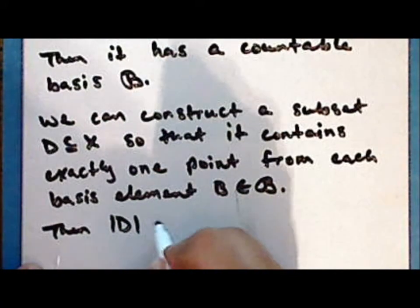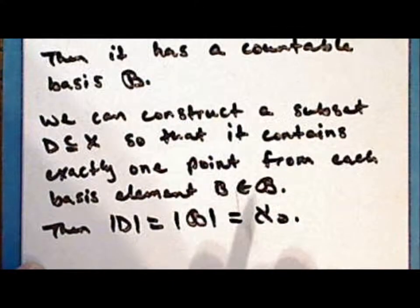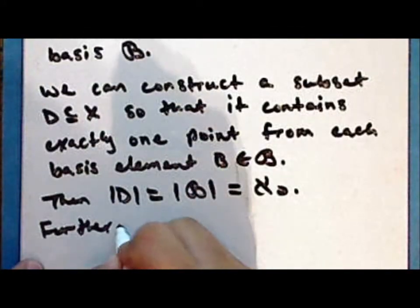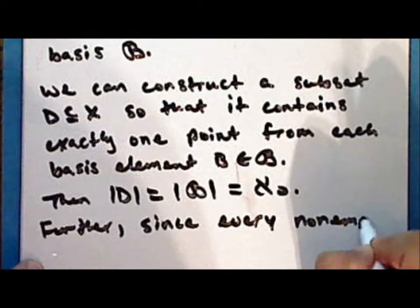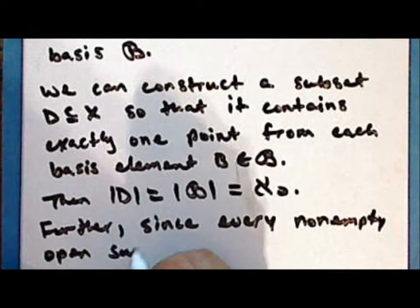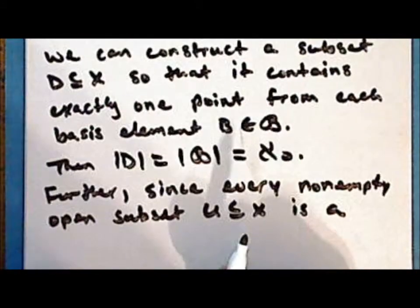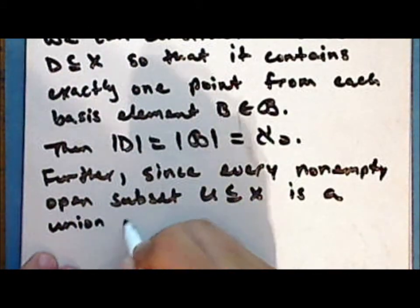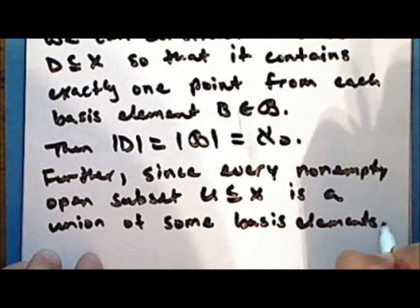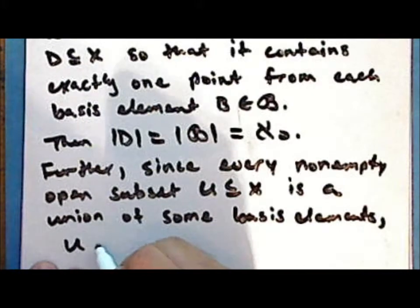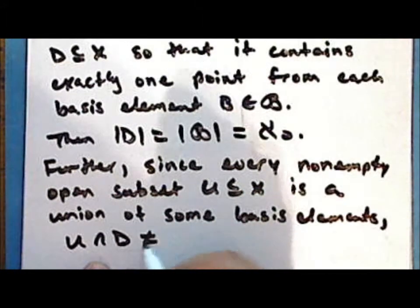Then the cardinality of the set D is the same as the cardinality of the basis, which is countable. Further, since every non-empty open subset U of X is a union of some basis elements, we have that the intersection of the set D with every non-empty open subset U is not empty.